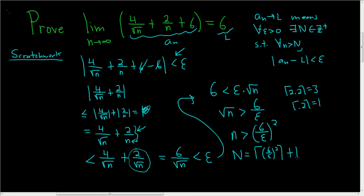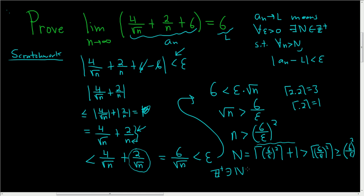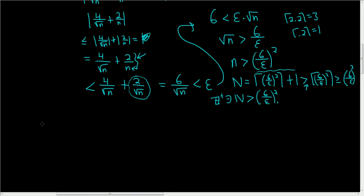And then we have to add 1 — there's a reason for that. Because now capital N is greater than (6/epsilon) squared. We can do that because this side is greater than this because we dropped the 1, and the ceiling rounds up the value (6/epsilon) squared, so it's certainly greater than or equal to (6/epsilon) squared. So N is a positive integer and it's greater than (6/epsilon) squared. So we just found it. That was harder than the proof — we just figured it out, now we just have to formalize it.